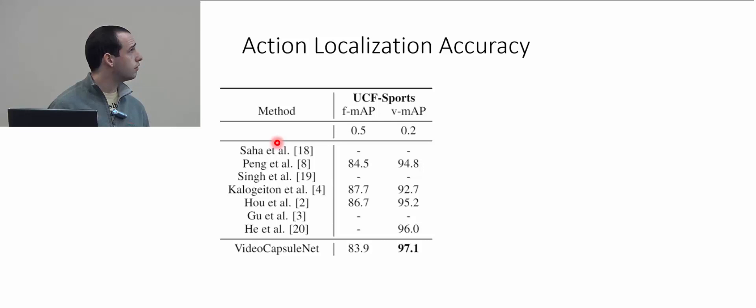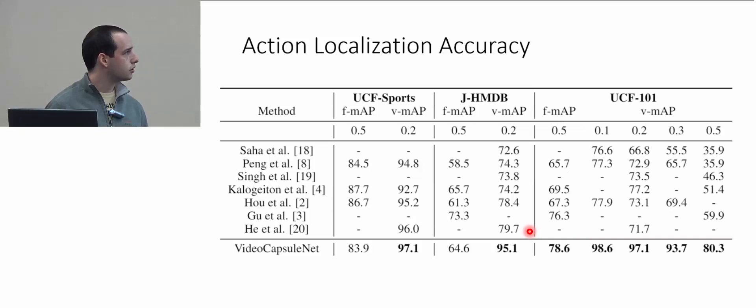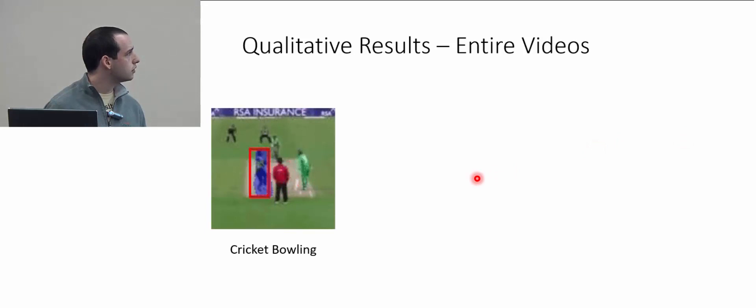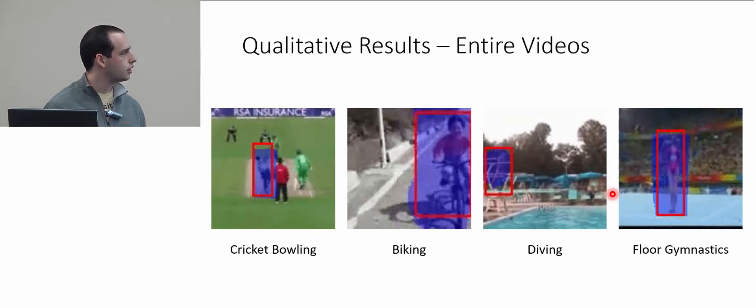The results for localization accuracy are as follows. For UCF Sports, the network achieves state-of-the-art in vmap with an increase of 1%. For JHMDB, there's a much larger increase of about 15% in vmap. For UCF-101, the largest dataset, we see improvements across the board — about 2% in fmap and roughly 20% increase in all vmap IOUs. Qualitatively, the red box is the ground truth bounding box and blue is our network's output. Even if the actor moves off screen and comes back, we still maintain segmentation, and even with significant motion the network successfully segments the actions.